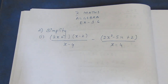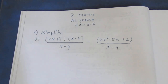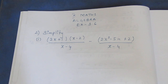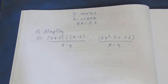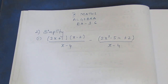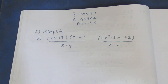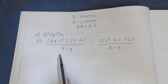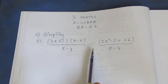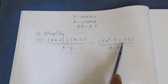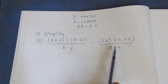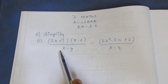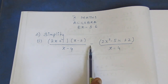Hello, I am Iqli. In this 10th Maths Algebra exercise 3.6, 2nd sum — look at the question. Simplify: 2x plus 1 into x minus 2 by x minus 4, minus 2x squared minus 5x plus 2 by x minus 4. This minus is in the denominator — subtractions and additions.